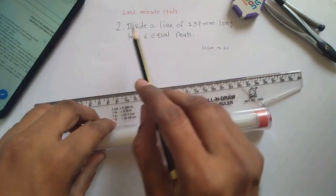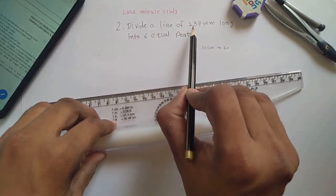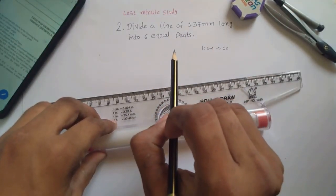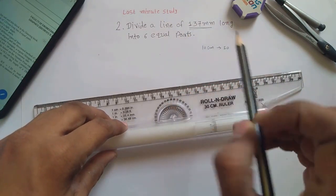Here the second problem for the first sheet is divide a line of 137 mm long into 6 equal parts. First of all we are going to draw a 137 mm long line.